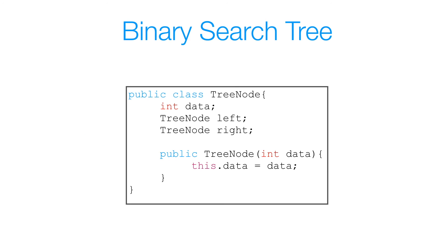We're going to use the same tree node class we've been using for the last few videos. Here we have our tree node class with three instance variables: data associated with every node in our binary search tree, and left and right reference variables for the left and right subtrees respectively. We also have a constructor that takes in a data argument to initialize our instance variable.